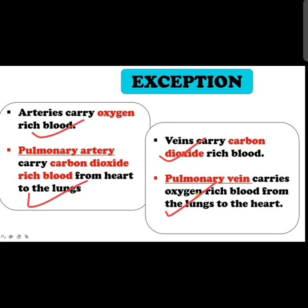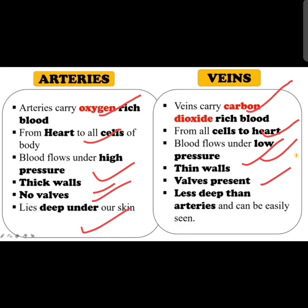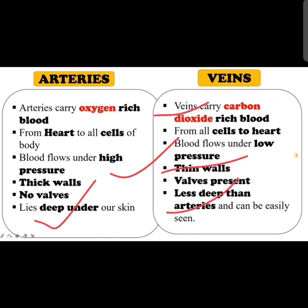Differences between arteries and veins: Arteries carry oxygen-rich blood; veins carry carbon dioxide-rich blood. Arteries carry blood from the heart to all cells; veins carry blood from cells back to the heart. Blood flows under high pressure in arteries and low pressure in veins. Arteries have thick walls; veins have thin walls. Arteries have no valves; veins have valves. Arteries lie deep under the skin; veins are less deep and can be easily seen.